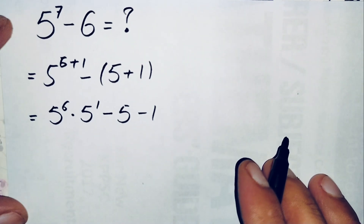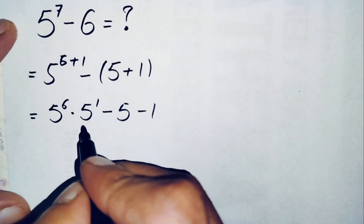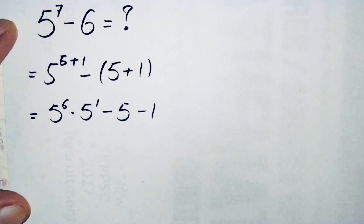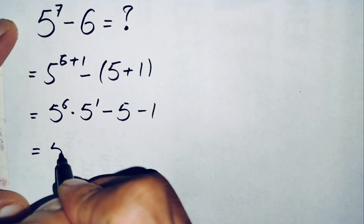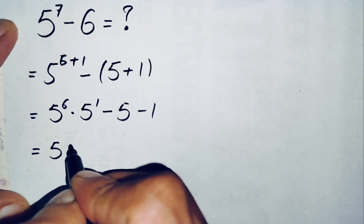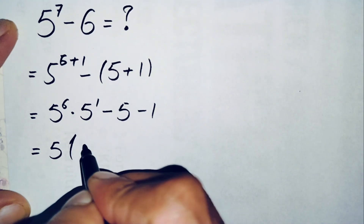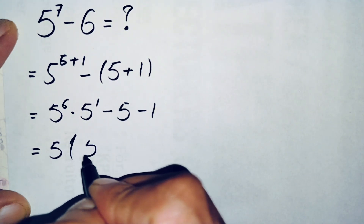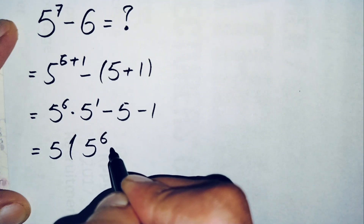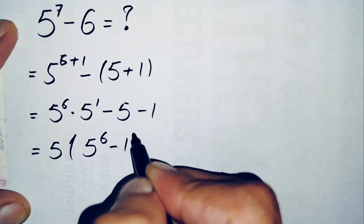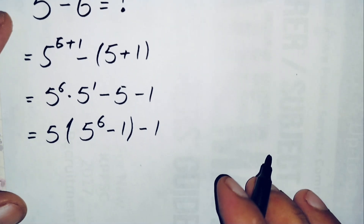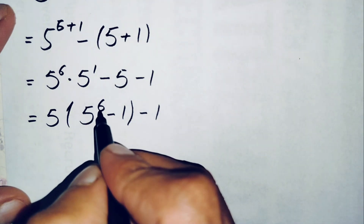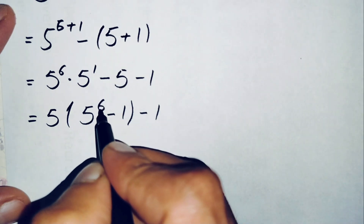Here we take 5 as common from both terms. After factoring out 5, we get 5 times (5 raised to power 6 minus 1), with only 1 left inside.